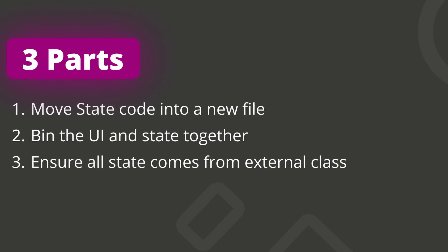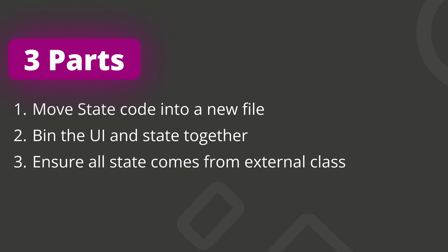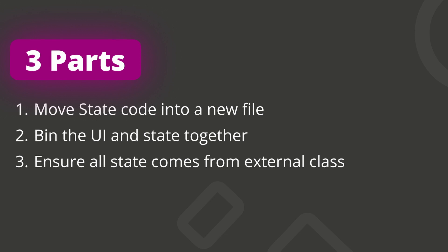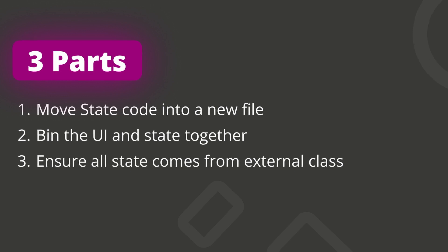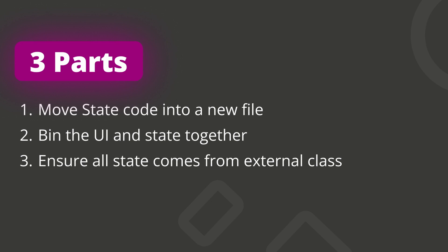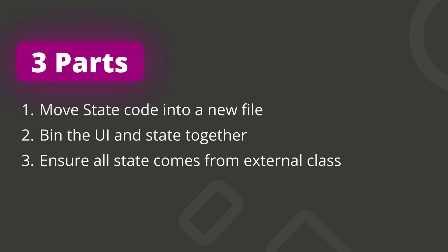The third step is to clean up — change all the references in your UI to use the view model. After moving the code out, you go through, update all the properties, add all the properties needed to display state, and move functions like onPressed or code running in initState into functions in your view model, calling them through the view model. The last step is a check: make sure that in your file dedicated to Flutter UI, there is only Flutter UI code and the code to read the state or interact with the object that has your state.